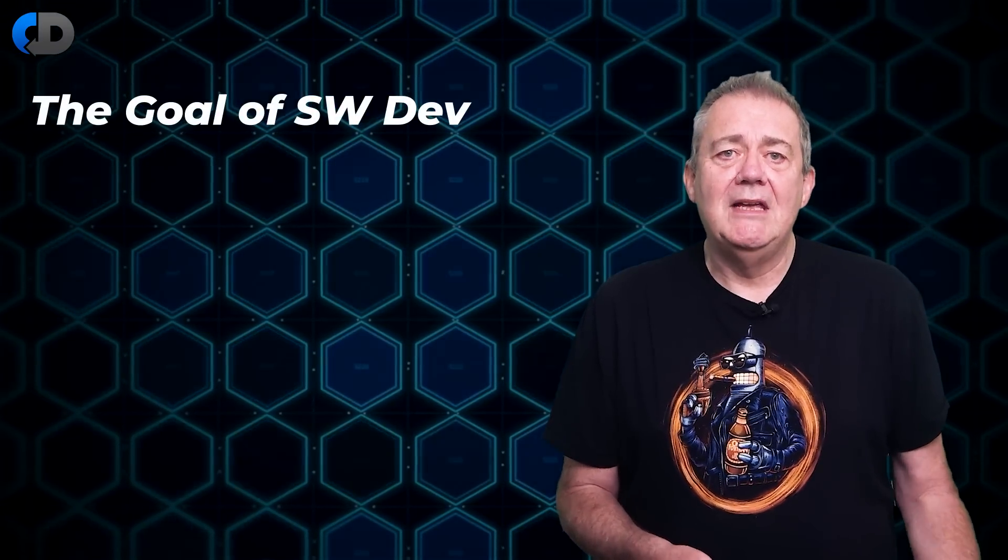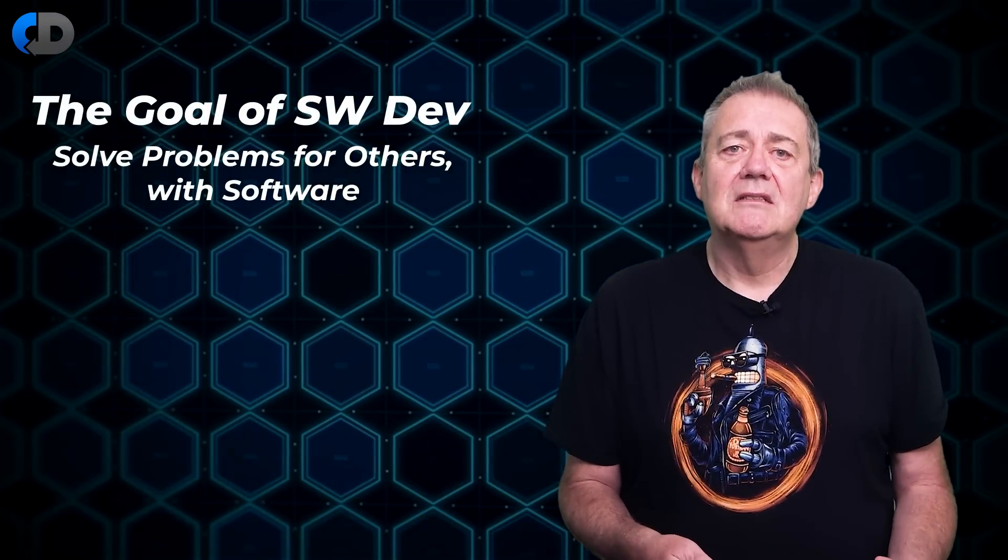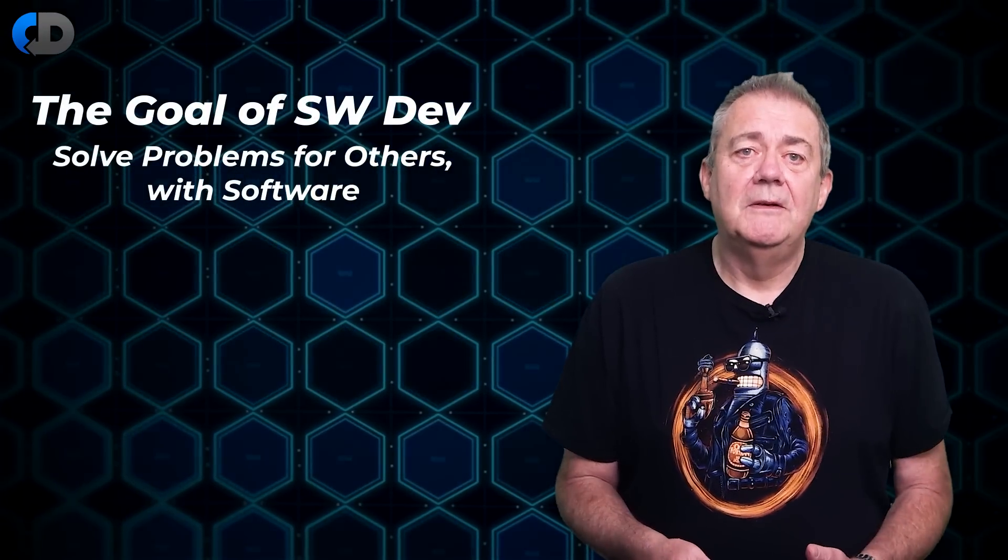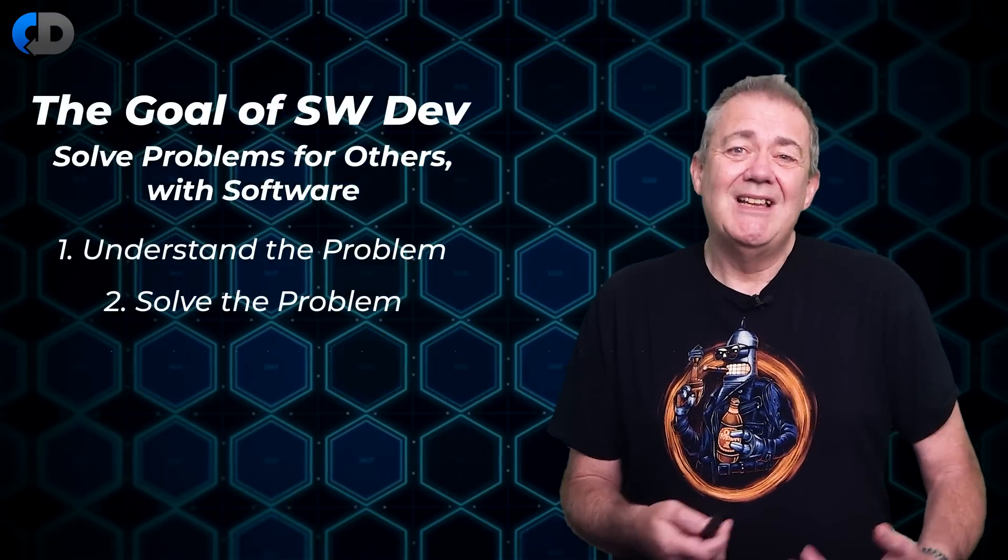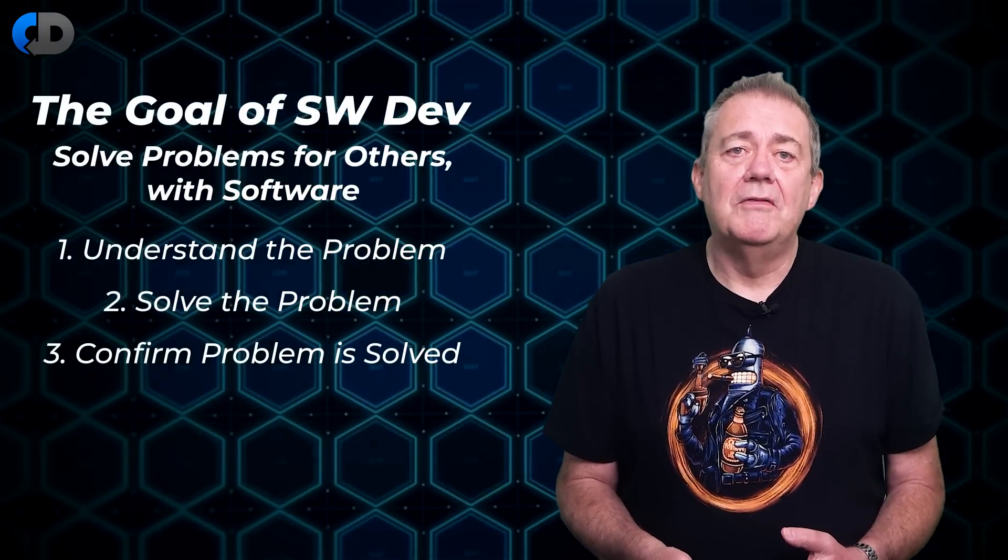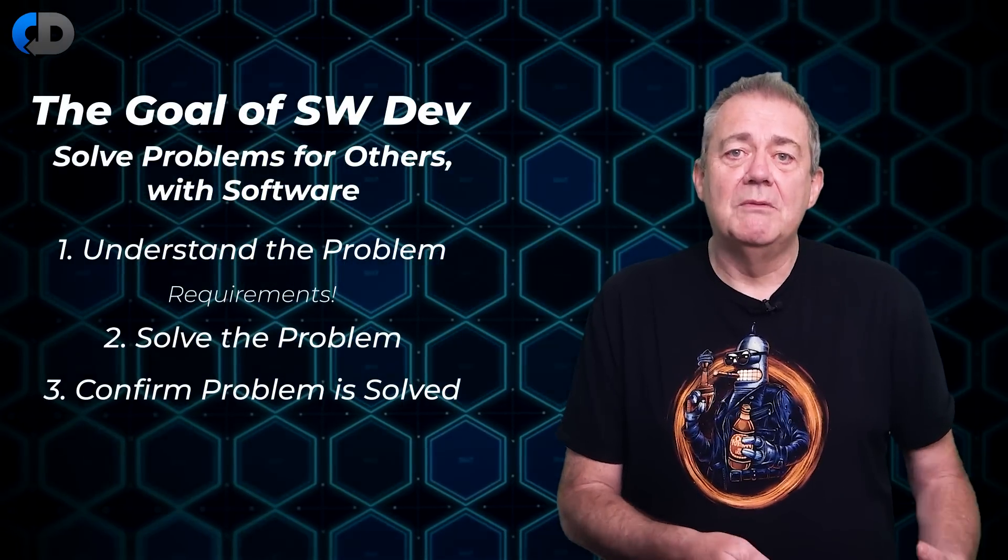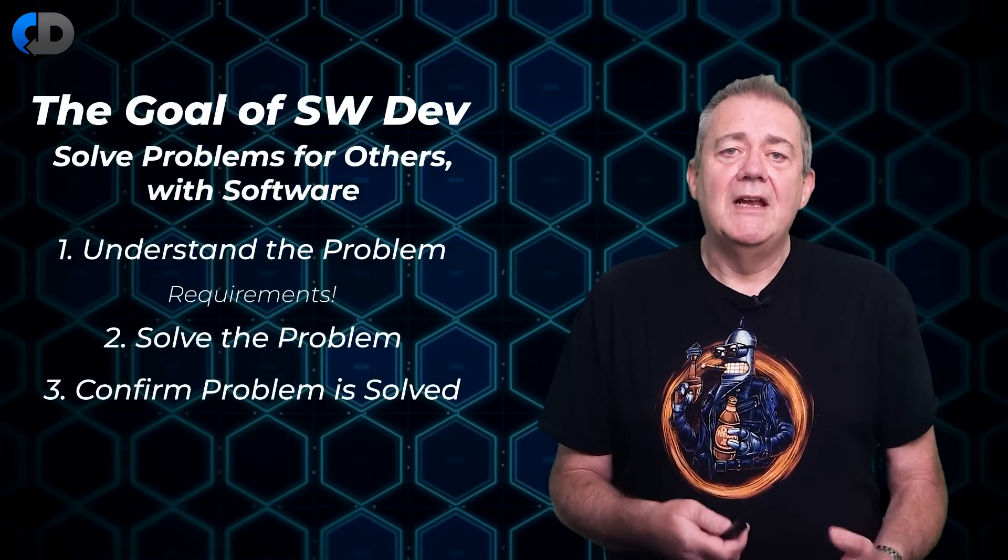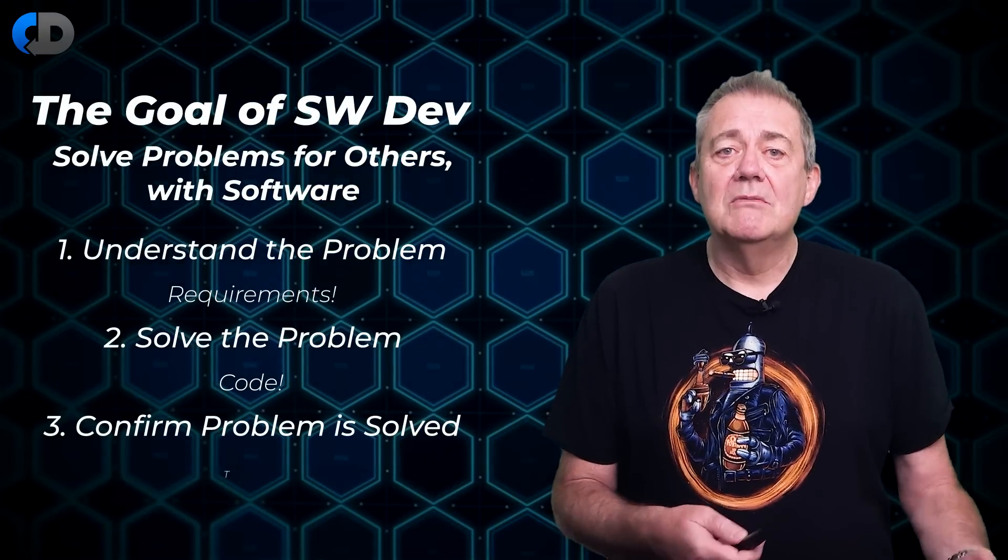Let's start with what software development is really for. You may write software for fun or to learn something new but if we're being paid to write software then our job is to solve problems for other people with it. So if we want to do that there are three things that we have to do. We need to understand the problem that we're trying to solve. We need to solve the problem and we need to confirm that the problem is actually solved. So as an absolute minimum we need some form of requirement that describes the problem that we're trying to solve and if we're using software to solve the problem we need some code of some kind that's going to solve it and we need some tests that confirm that the problem is actually solved when we're done.